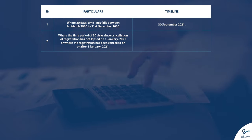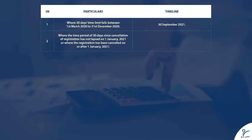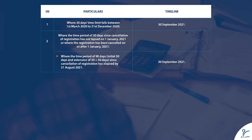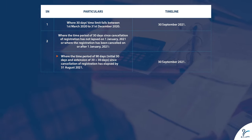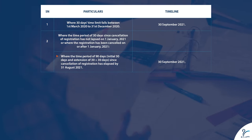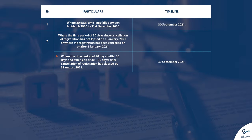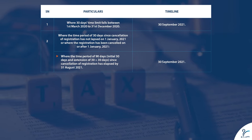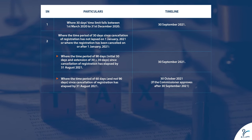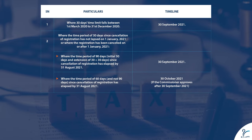Case two — where the time period of 30 days since cancellation of registration has not lapsed on 1 January 2021, or where registration has been cancelled on or after 1 January 2021. Case three — where the time period of 90 days (initial 30 days and extension of 30 plus 30 days) since cancellation of registration has elapsed by 31 August 2021, the timeline is 30 September 2021.